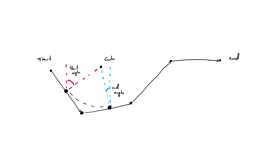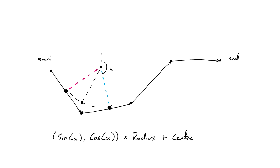To get a point on the semicircle, we interpolate between the angles of the endpoints with the circle center, and use trigonometry to convert the angle to a position on the circle.